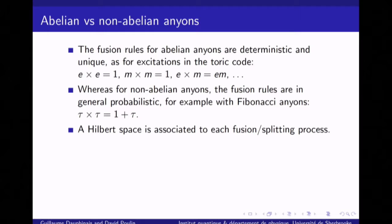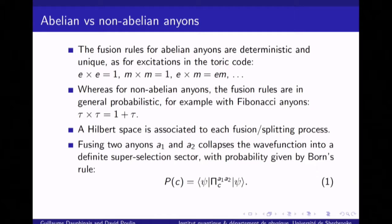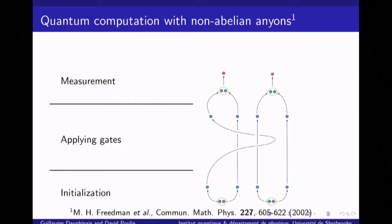There's a Hilbert space associated with these fusion or splitting processes. If you have a set of anyons and ask what is their total charge, it's essentially given by Born's rule — in general, some probability of fusing to a total charge. We can use these to do quantum computation. The main idea is to start from the vacuum state with no excitations, create pairs of excitations, and encode our qubits in the fusion space associated with these non-abelian anyons.